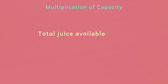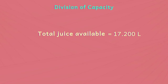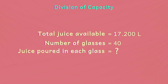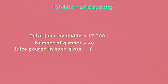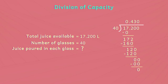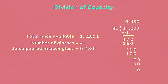Now, if we have to serve 17.200 litres of juice in 40 glasses equally, how much juice will be poured in each glass? We need to divide 17.200 litres by 40. 17.200 ÷ 40 = 0.430 litres. Thus, each glass will have 0.430 litres of juice.